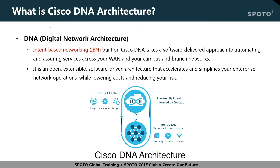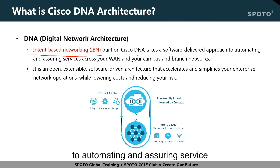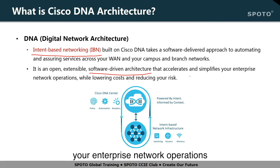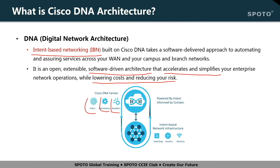Cisco DNA architecture is Cisco's way to deliver SDN. It is intent-based networking built on Cisco DNA, taking a software-delivered approach to automating and assuring services across your WAN and campus and branch networks. It is an open, extensive, software-driven architecture that accelerates and simplifies enterprise network operations while lowering costs and reducing risk. In Cisco DNA, it has policy, automation, and analytics.